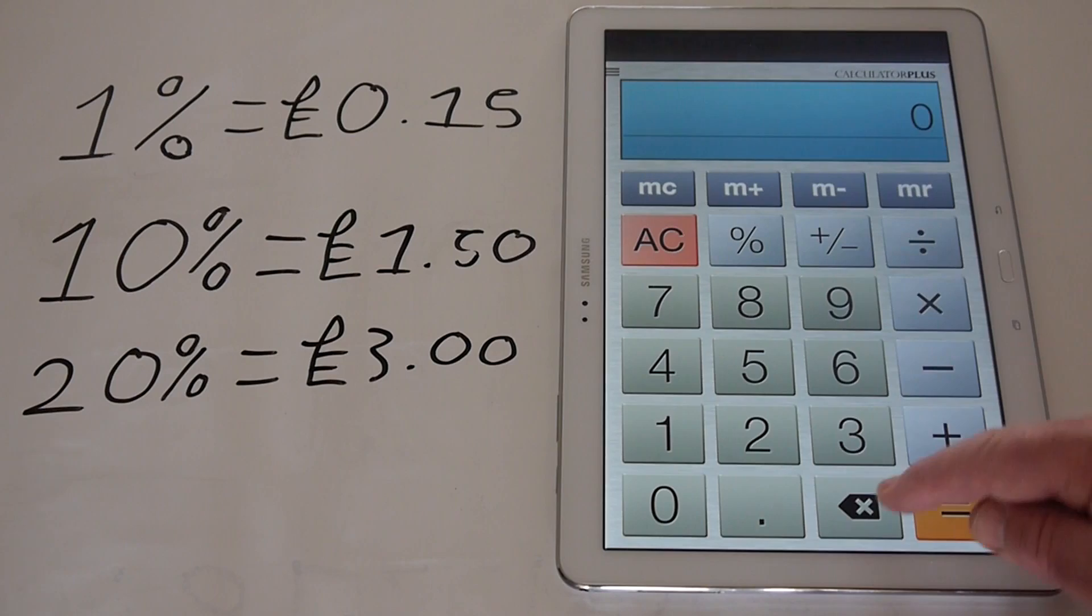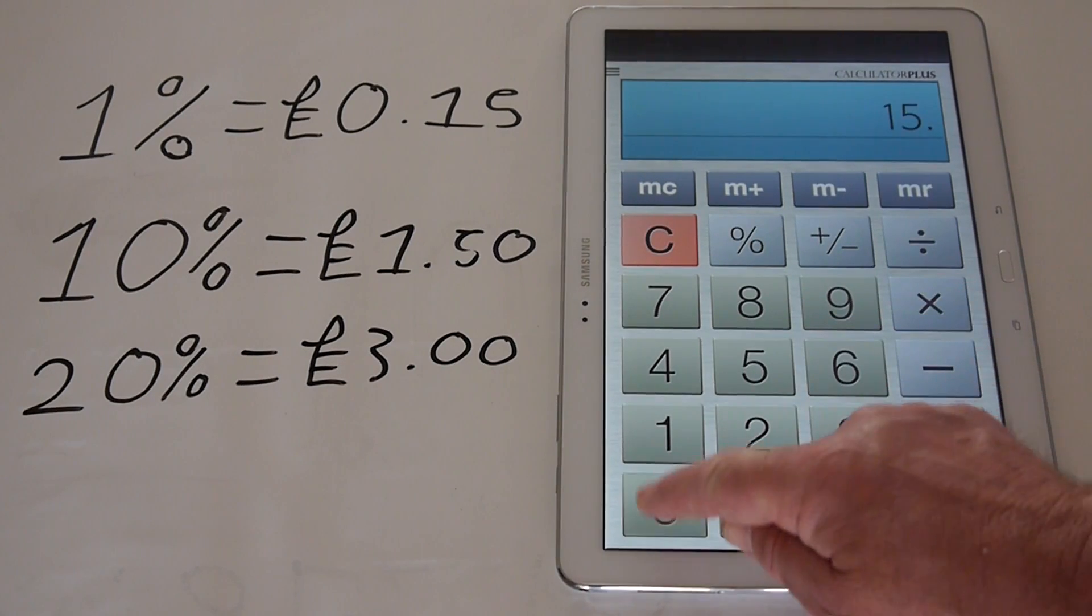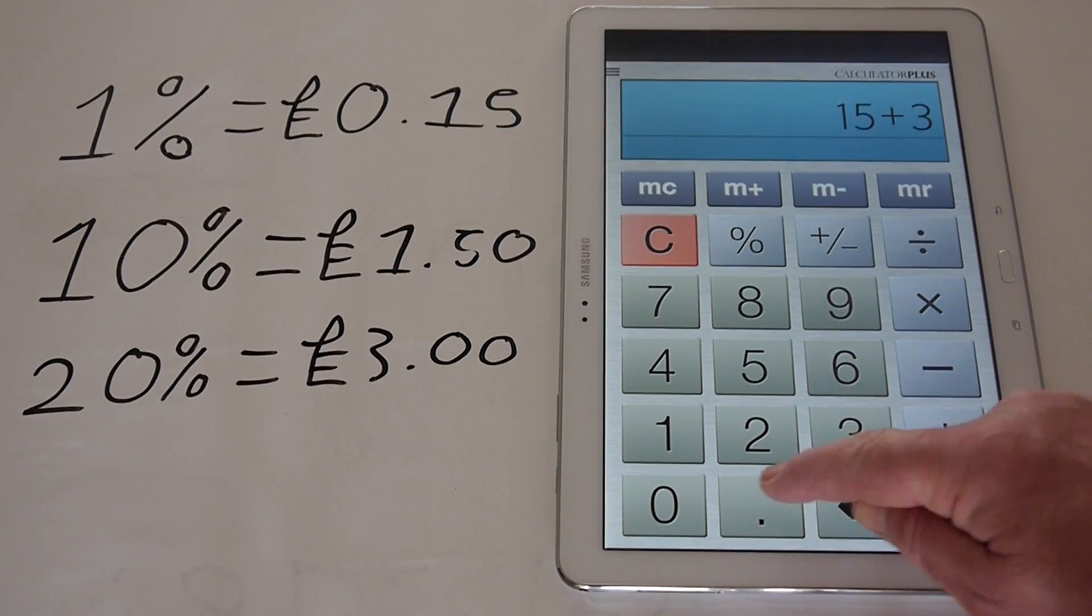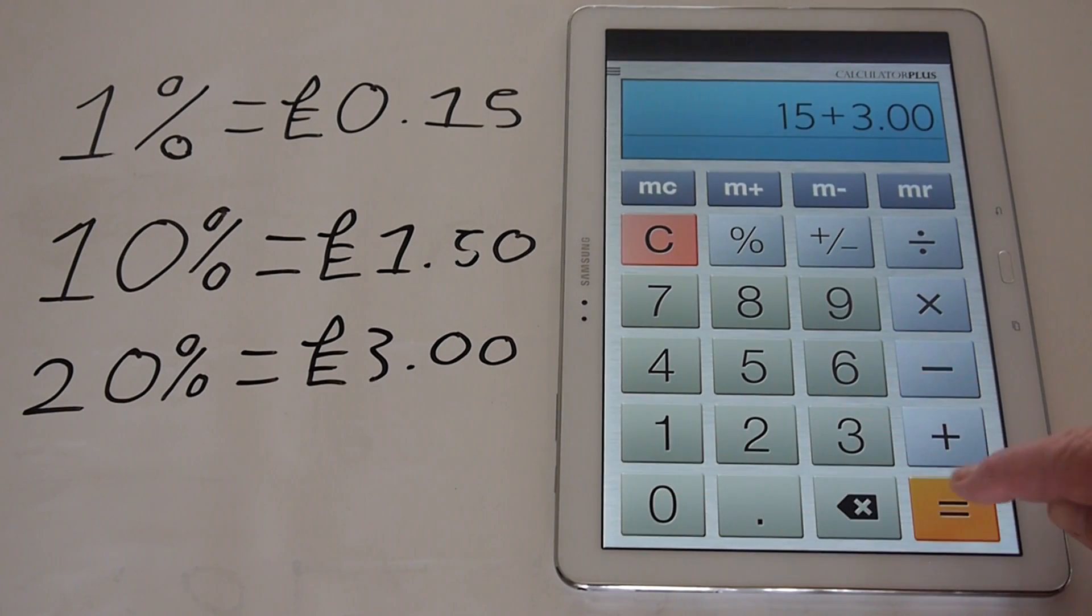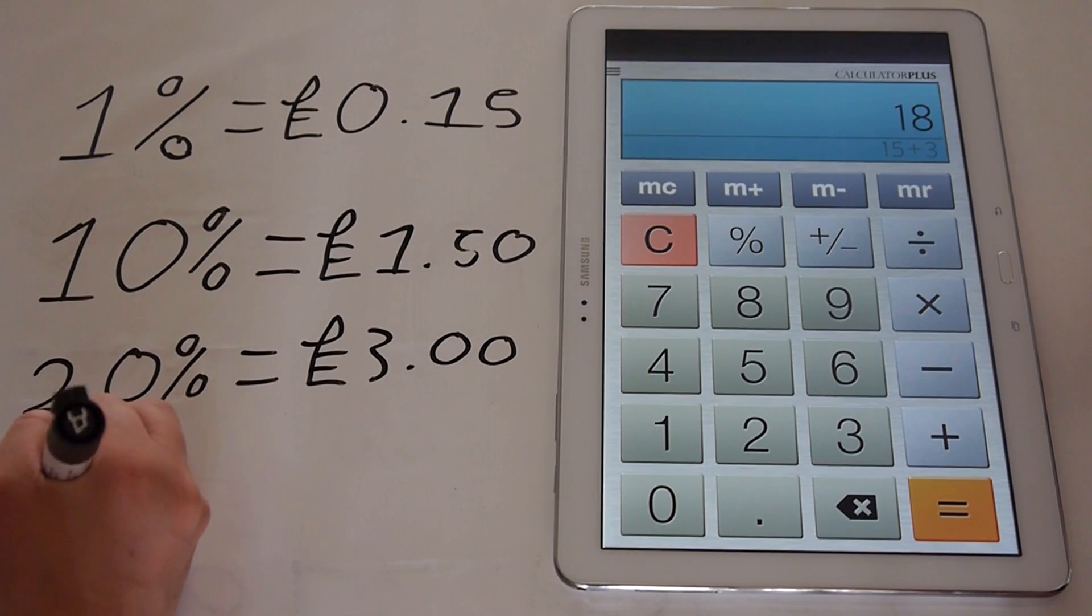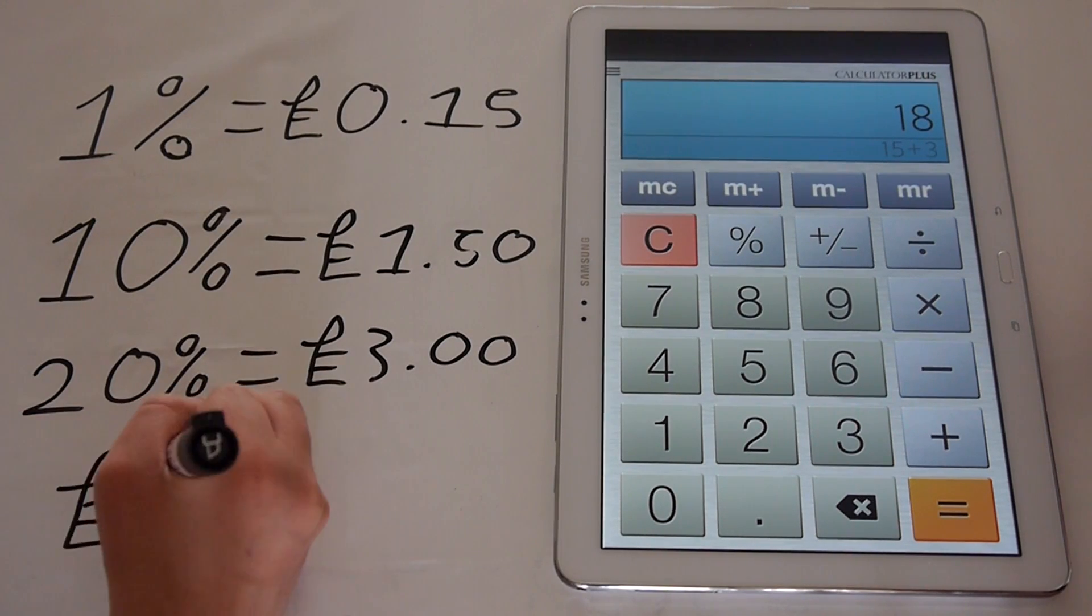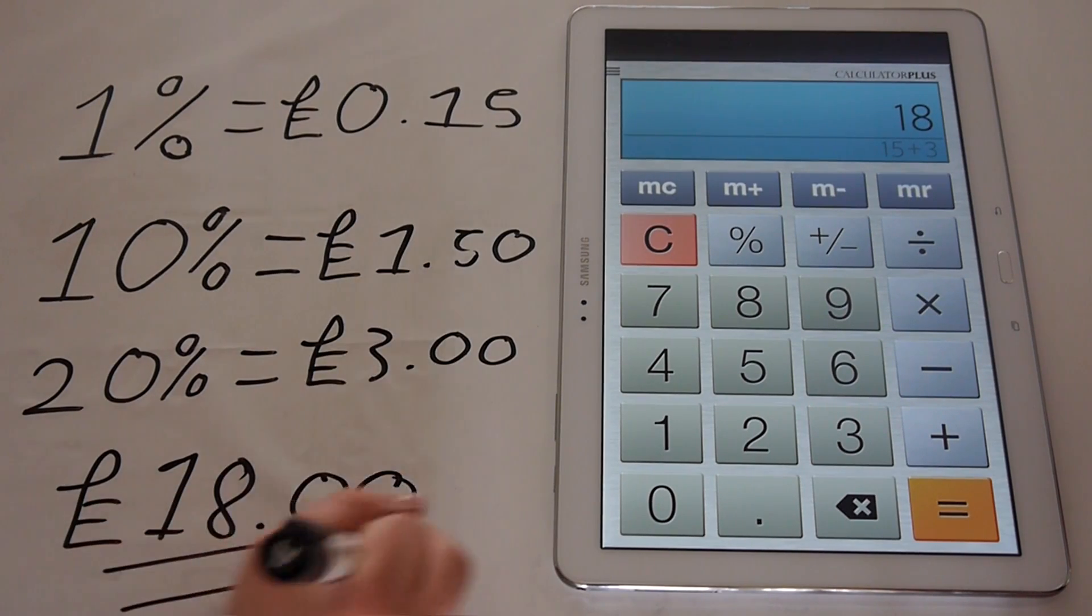So going back to the original amount, the £15, plus add on the £3, which is the VAT, the 20%, giving us a new total of £18.00. So the answer to £15 plus 20% is £18.00.